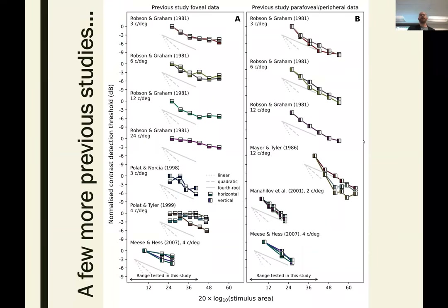Here's some more data from a bunch of previous studies. On the left we have stuff done in the fovea and on the right stuff done in the periphery. In foveal studies you get the shallowing-off I mentioned earlier because of the sensitivity decline. That's not true in the peripheral studies because they used regions where sensitivity is more constant. There's also a tendency for things to be a little bit steeper at the beginning, but those studies aren't testing very small stimuli.